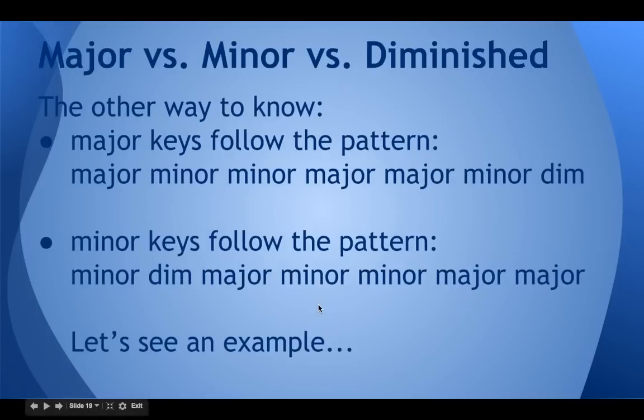Now the simplest way to know which one they are in a key signature, so you don't have to keep counting intervals, the simplest way is to just know the pattern that it follows. Any major key is going to go major, minor, minor, major, major, minor, diminished. And minor keys are going to go minor, diminished, major, minor, minor, major, major. So they're always going to follow this pattern. If you're in a major key, the 1's going to be major, the 4's going to be major, and the 5's going to be major. 2's always going to be minor. It always follows these same patterns, no matter what key you're in.